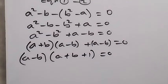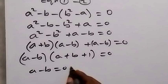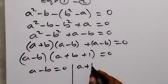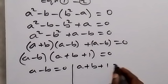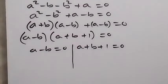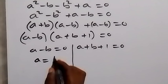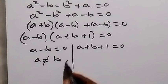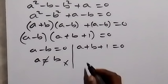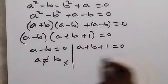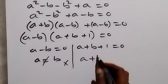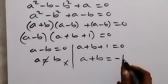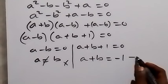From here we have two cases: a minus b equals 0, meaning a equals b. But we established from the beginning that a is not equal to b, so we discard that case. The other case gives us a plus b equals minus 1. Let's call this equation 3.